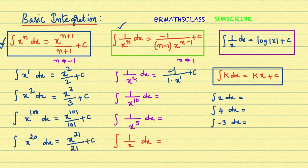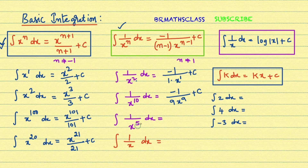Integral of 1 by x power 10 dx: in the numerator we write minus 1, and in the denominator we reduce the power by one, so 10 becomes 9, giving minus 1 divided by 9 into x power 9 plus c. Similarly, integral of 1 by x power 5 dx gives minus 1 divided by 4 into x power 4 plus c.